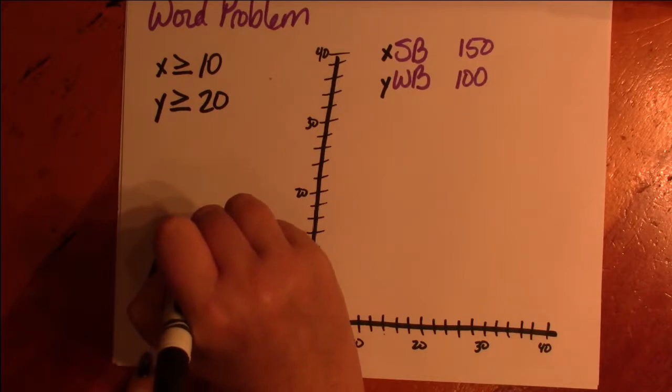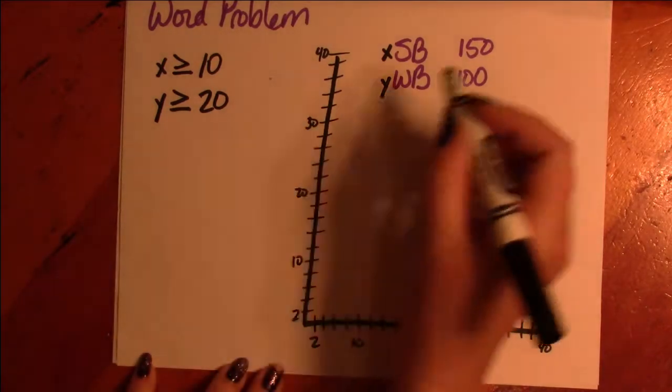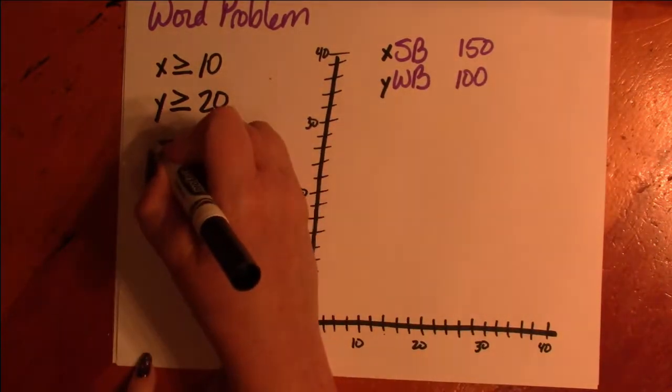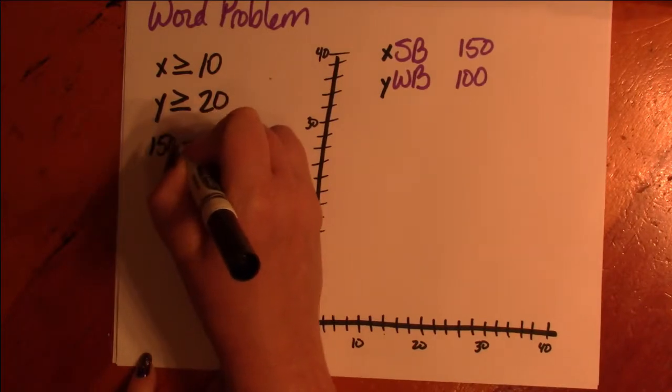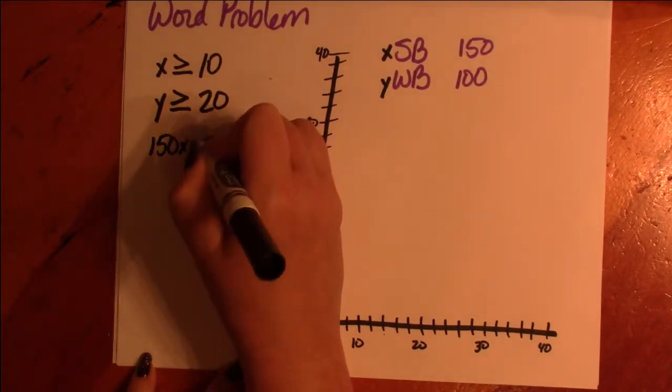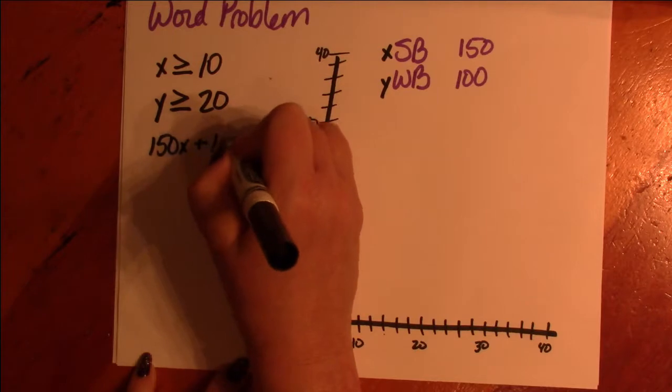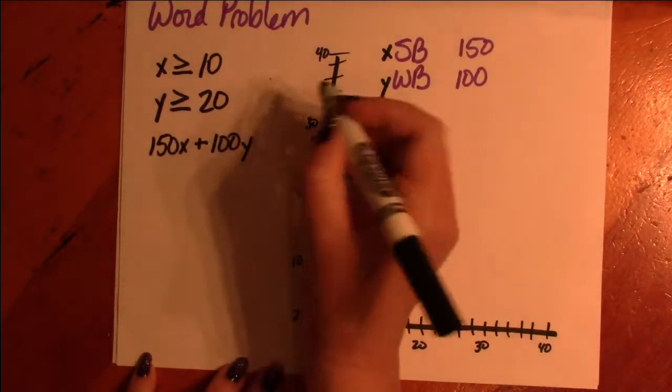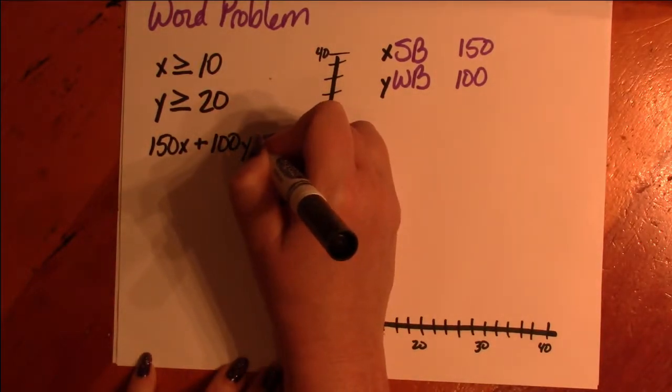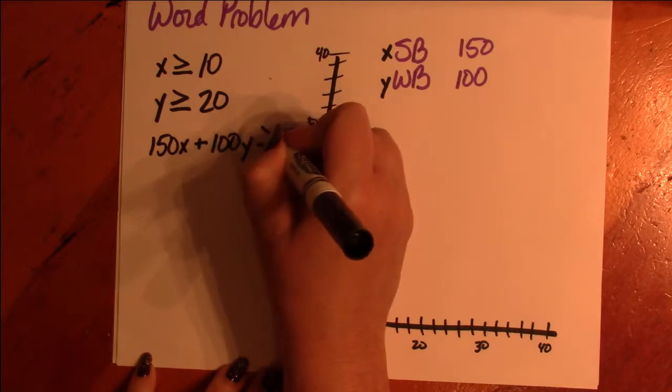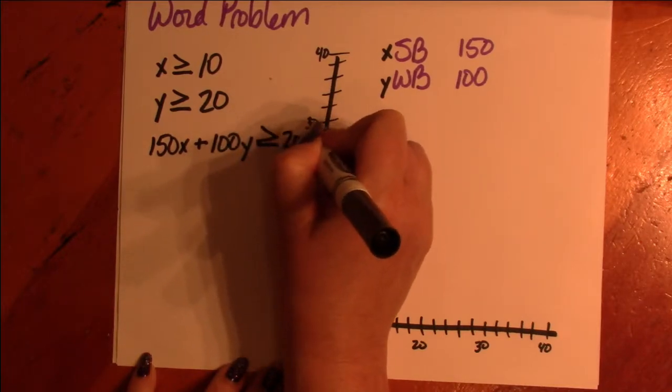And he wants to earn at least $2,000 a month, which means 150 times the number of surfboards he sells plus 100 times the number of wakeboards he sells has to equal or be greater than $2,000 a month.